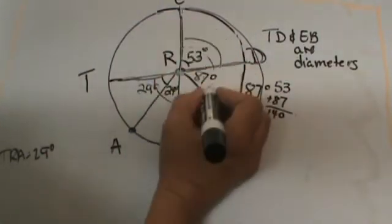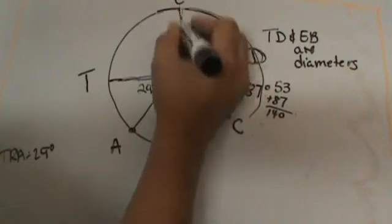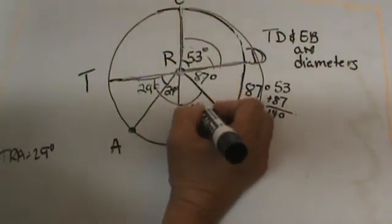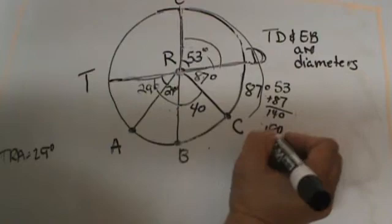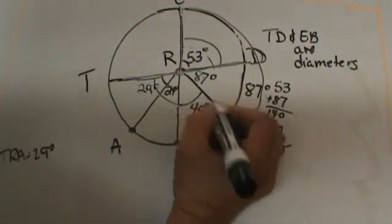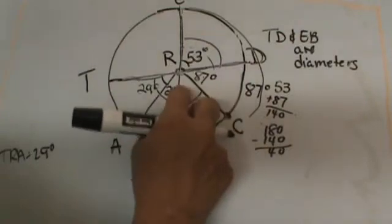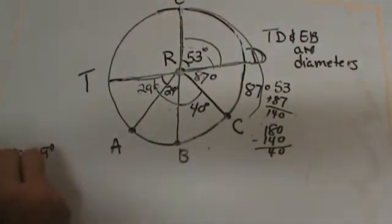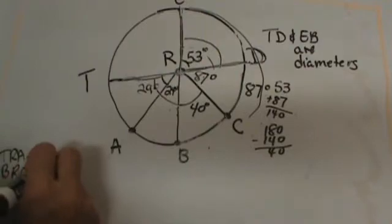So if this portion is 140 and I have a diameter, that leaves 40 for this part because I would take 180 minus 140, and that would leave me with 40 degrees left for angle BRC. That means BRC is 40 degrees.